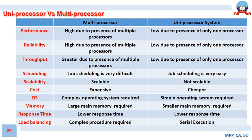Regarding operating systems: a multiprocessor system requires a complex operating system because you need an efficient algorithm to optimally utilize all processors, along with a good scheduling algorithm and communication protocol. A simple operating system is sufficient to manage a uniprocessor system.